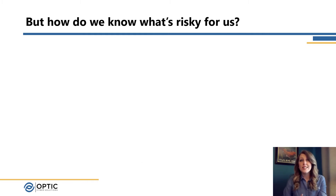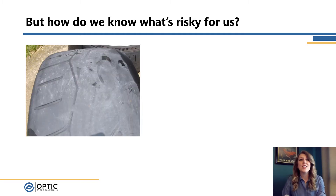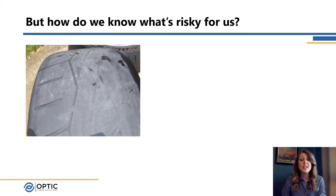But how do we know what's risky for us? This is what's really tricky. In the previous example, we had our tornado blowing through the office. But it's really important for organizations to stop and think — do we even care about the tornado? Do we live in an area where tornadoes are common? Do we have sensitive information? Do we use paper anymore, or is everything in the cloud? I've got an example here of a tire. I can look at this tire and see that it is pretty bald, that it doesn't have a lot of tread, and that may or may not be a problem.